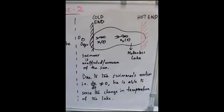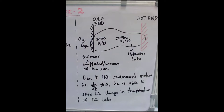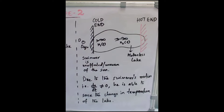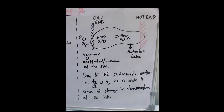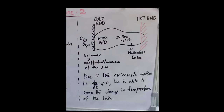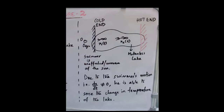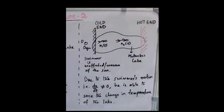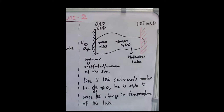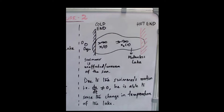Now let us change the situation. The lake is a motionless lake where one end is constantly at a colder temperature and the other end is constantly at a hotter temperature. We have allowed the swimmer to swim from the cold end to the hot end — that is, the position of the swimmer is not constant with time. When the swimmer moves from the cold end to the hot end, he will be able to detect the change in temperature along the direction of motion. Here, we are not telling the swimmer about the presence of the sun; he is unaware of it. So the only way he can detect the change in temperature is through his motion, and such a detection is known as convective derivative.